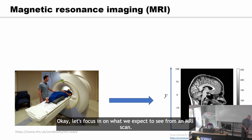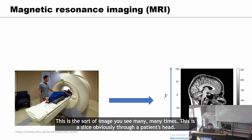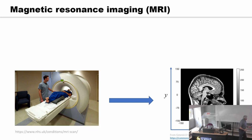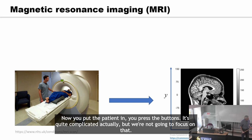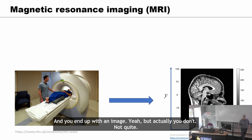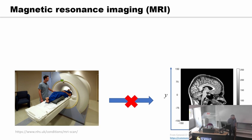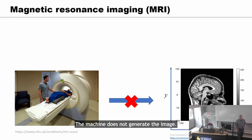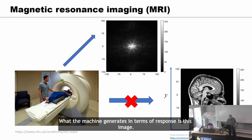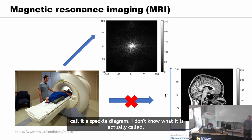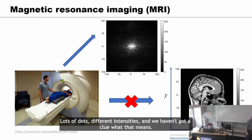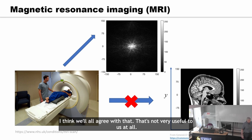Let's focus on what we expect to see from an MRI scan. This is the sort of image you see many times — a slice through a patient's head. You put the patient in, press the buttons, and you'd expect an image. But actually the machine does not generate the image directly. What the machine generates in terms of response is what I call a speckle diagram — lots of dots of different intensities — and we haven't a clue what that means. That's not very useful to us at all.